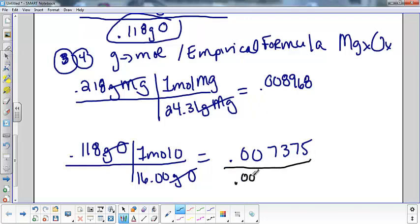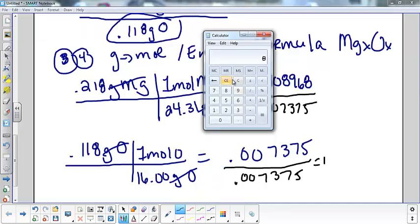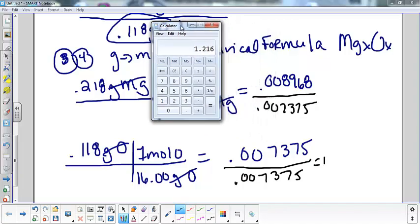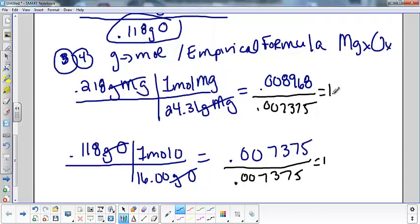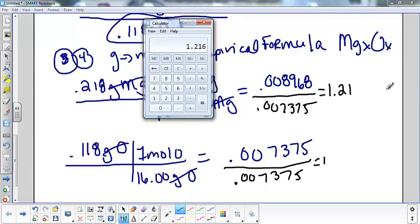This is going to be 1 because we divide it by itself. But if I take this one and do this on my calculator, if I take 0.008968 and divide it by 0.007375, I get 1.216. Now that is way not 1.001, so I can't round it. In fact, what I'm going to do is say that the 1.216, we're going to say that's closer to 1.25, which is a decimal.